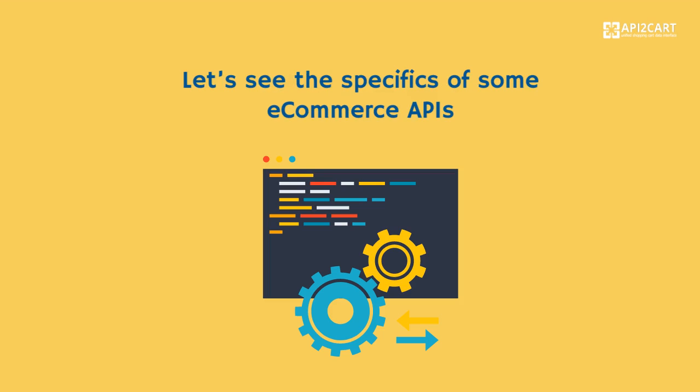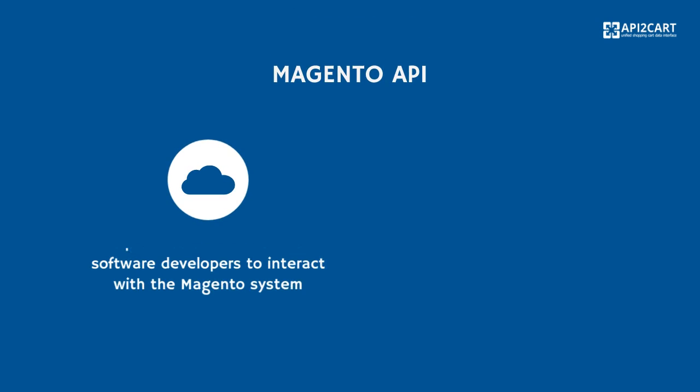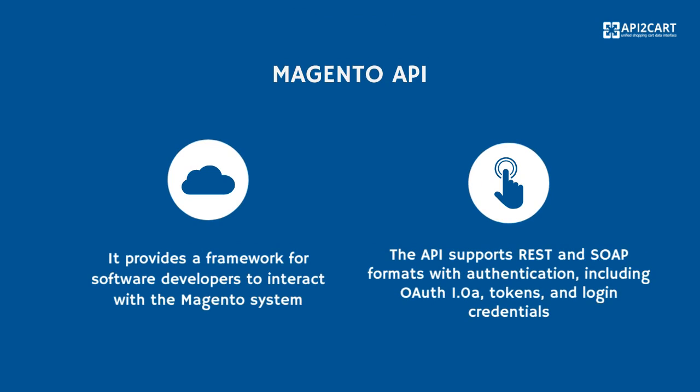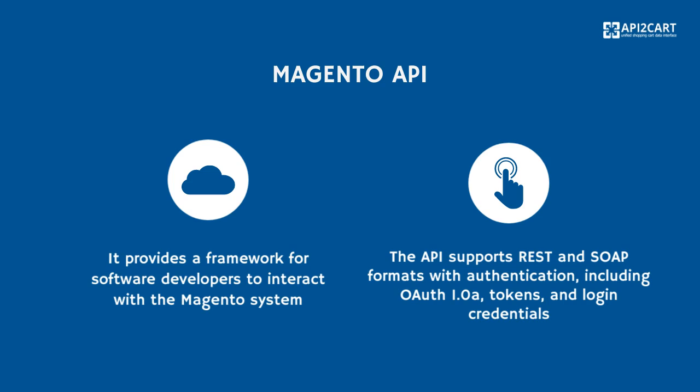Let's see the specifics of some e-commerce APIs. Magento API is a popular e-commerce platform API. It provides a framework for software developers to interact with the Magento system. The API supports REST and SOAP formats with authentication, including OAuth 1.0a, tokens, and login credentials.